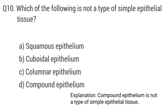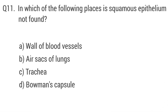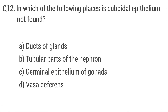Question 10: Which of the following is not a type of simple epithelial tissue? The right answer is option B: compound epithelium. Question 11: In which of the following places is squamous epithelium not found? The right answer is option C: trachea.